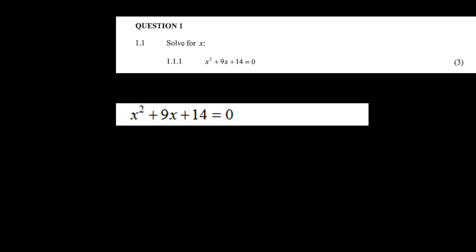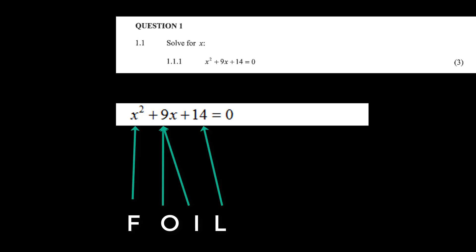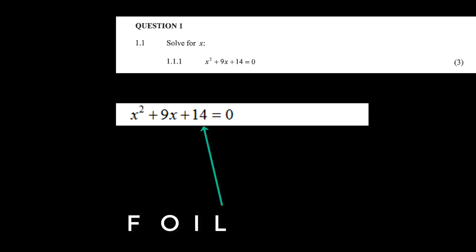The rule on factorizing a quadratic is FOIL — First, Outside, Inside, Last. The coefficient of x squared is 1, so the first term of each factor must be 1. For the last term we need factors of 14: this could be 1 and 14, or 2 and 7, and we can already see that it's 2 and 7.